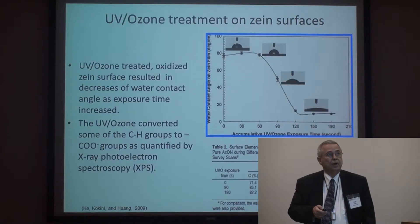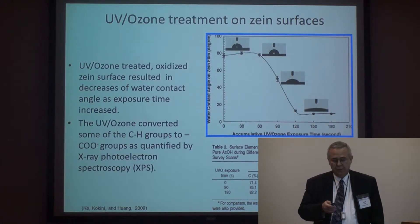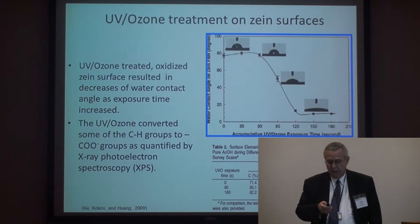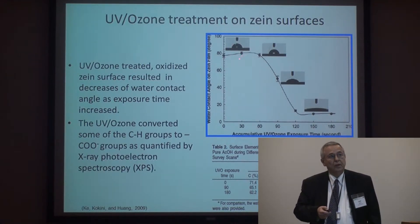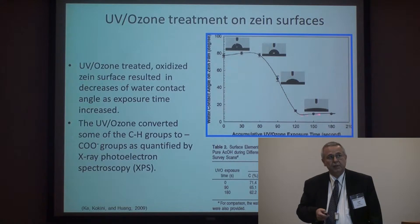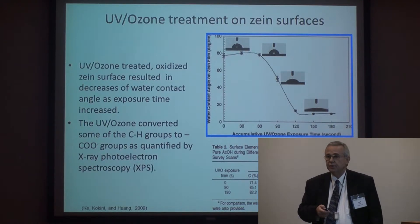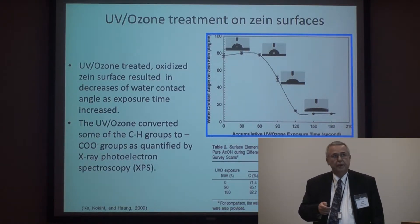We are also able to change the surface hydrophobicity of the Zein surfaces. By applying UV-Ozone treatment, we start with a highly hydrophobic protein, and then with increasing UV-Ozone treatment the surface becomes progressively hydrophilic, ultimately becoming mostly hydrophilic. This gives us biodegradable, edible options with different surface properties, covering the range from relatively hydrophobic to relatively hydrophilic material.